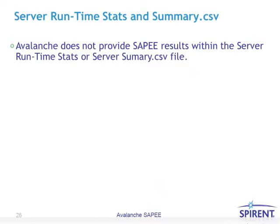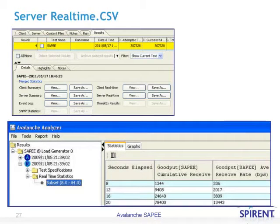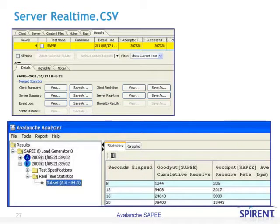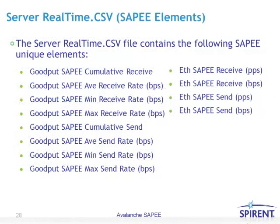From the server side, Avalanche does not provide SAPI results within the server runtime stats or the server summary.csv file. For the server real-time.csv, from the results tab you highlight the test and select the server real-time view button to access real-time statistics. The server real-time.csv file contains fewer SAPI unique elements than the client side — only good put information and Ethernet information for SAPI.